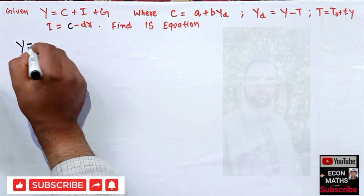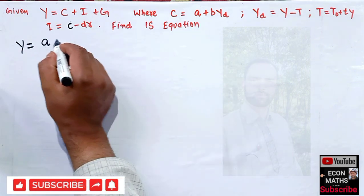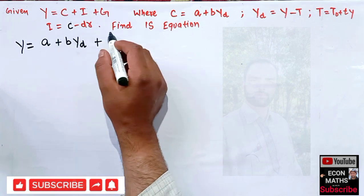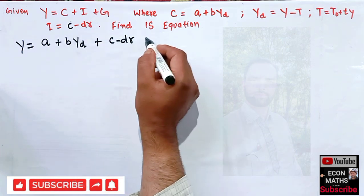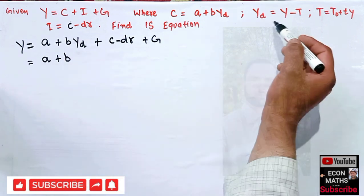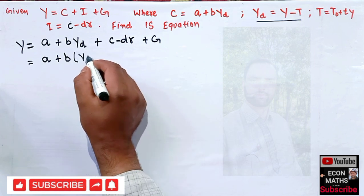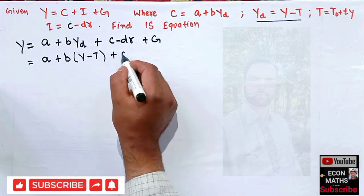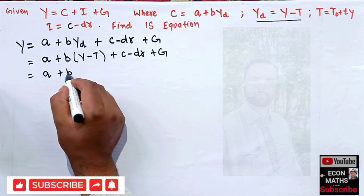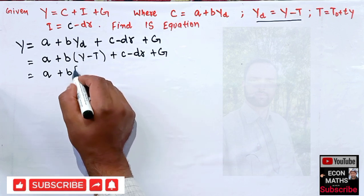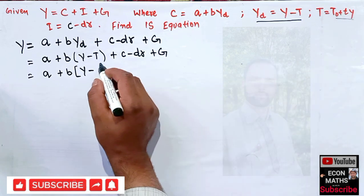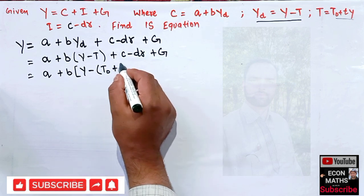Let us plug in the values. We have Y = C + I + G. Substituting: C = a + b·Yd, I = C − D·R, and G. In place of Yd we write Y minus T, and in place of T we substitute T₀ + t·Y. So the equation becomes: Y = a + b·(Y − T₀ − t·Y) + C − D·R + G.